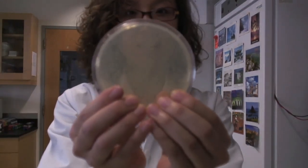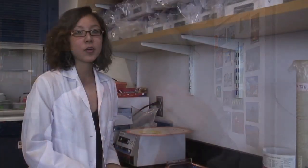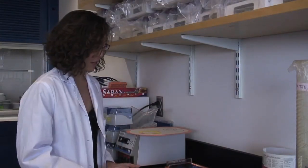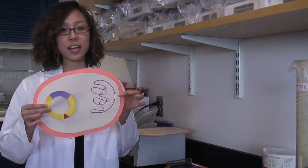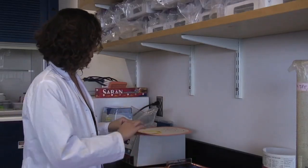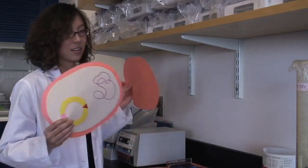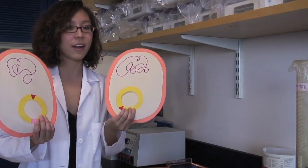Alright, so as you can tell, we've definitely got some colonies that grew on our plate overnight. So now the problem that we have is we need to be able to distinguish the bacteria that got these plasmids from the ones that got these plasmids, which don't have our frog DNA in them.